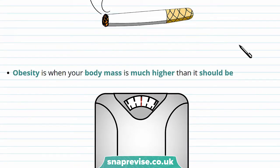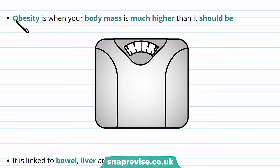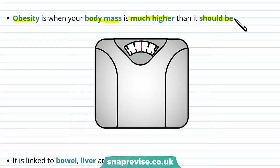Obesity is another risk factor. Obesity is when your body mass is much higher than it should be, and it causes a wide range of cancers — it's linked to bowel, liver, and kidney cancer. After smoking, it's known as the second biggest preventable cause of cancer.